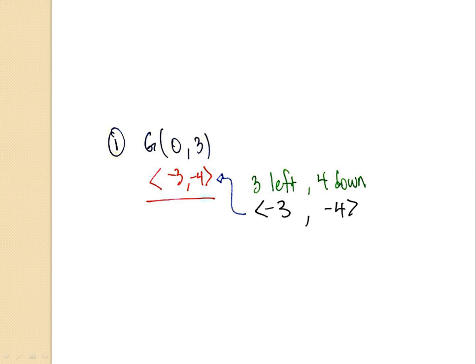Does anyone know the answer? If there's a hand up, it should be called on. And if that hand said that G prime was negative three comma negative one, then you're right. Go ahead and pause the video here — make sure it is paused and ensure that all the students have written this down next to their question, because you can use this on the test.